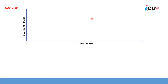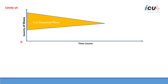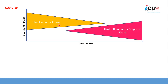To further elaborate on the course of COVID-19 infection, I present it in this graph where we have the time course on the x-axis and the severity of illness on the y-axis. Patients may go into two different phases: the first phase is the viral response phase representing viremia, and the second phase is the immune or host inflammatory response phase. Patients may also go into three different stages.